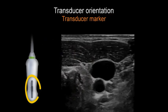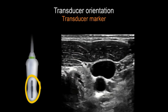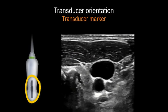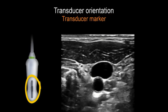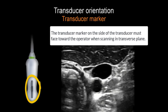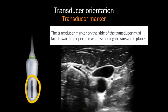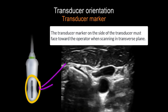Each transducer presents with a marker on the surface. This marker is important as it will give you an understanding of the orientation of the image on the screen.